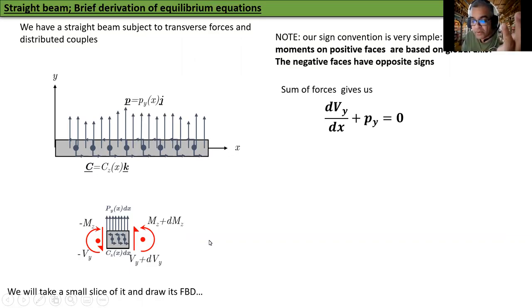Now you must be familiar with it. If I sum all the forces in the vertical direction, I will get this equation: DVY/DX plus PY equal to 0. You might have seen this with slightly different notation, but you should get familiar with this. This is how we are going to use it.